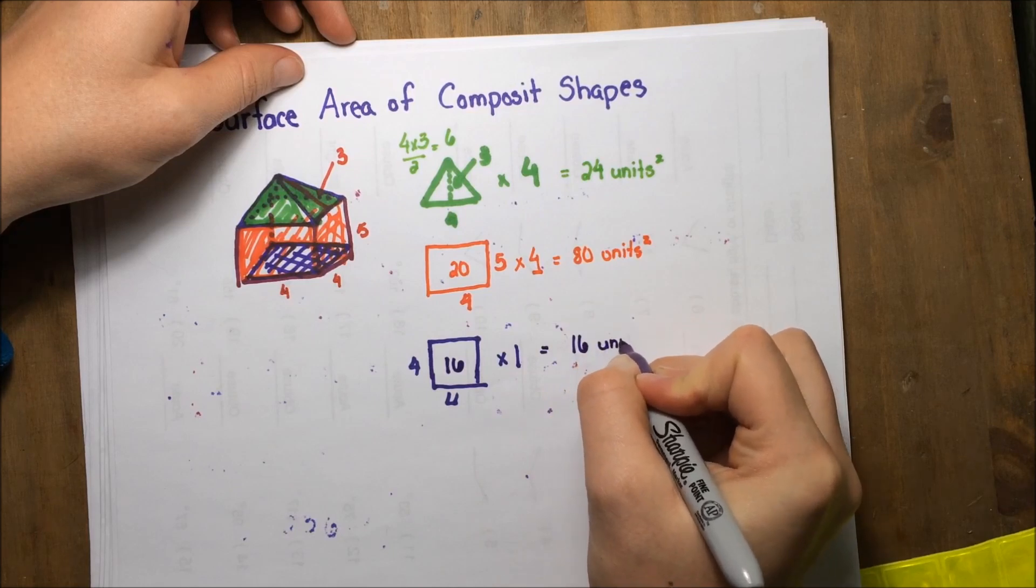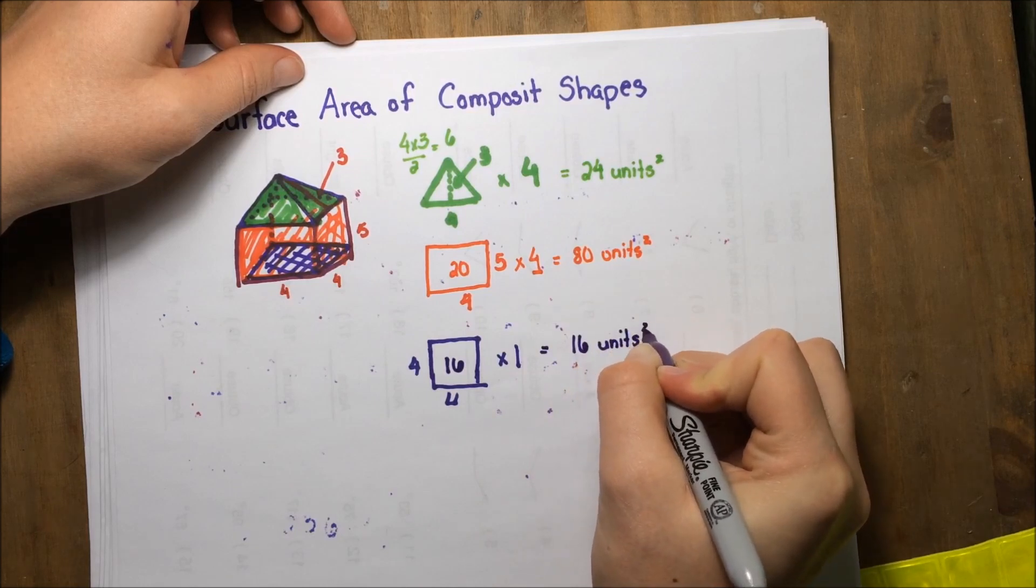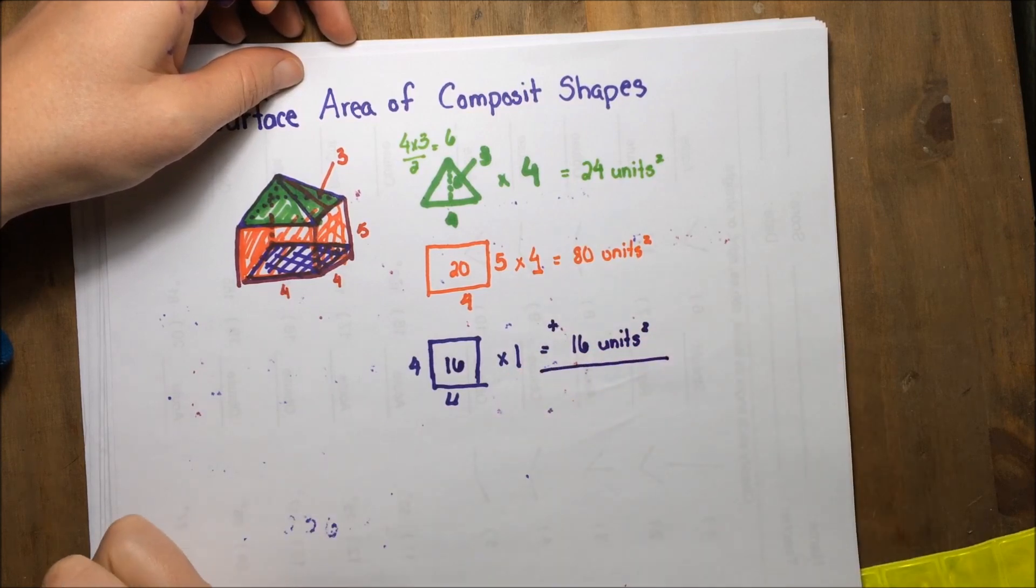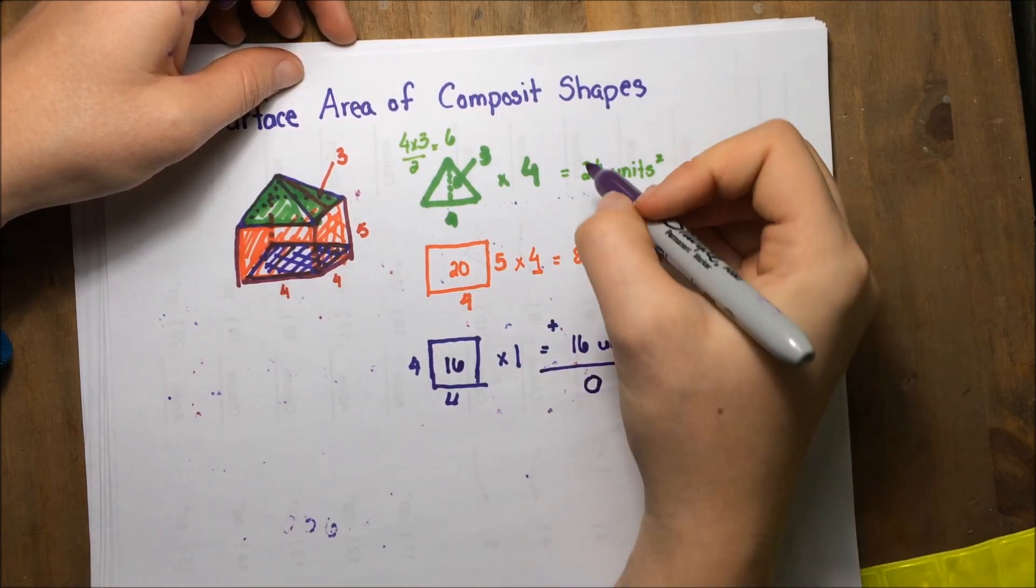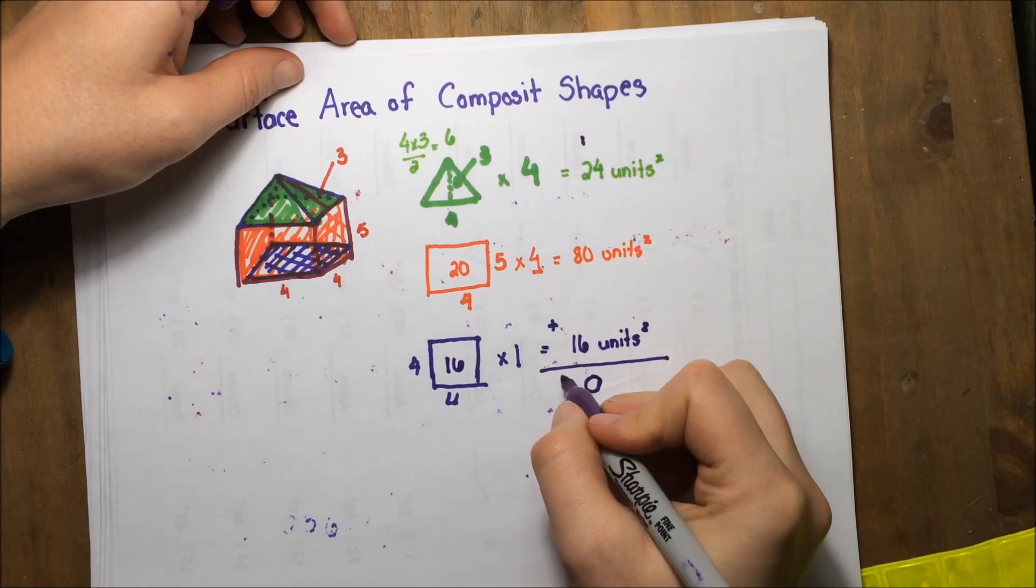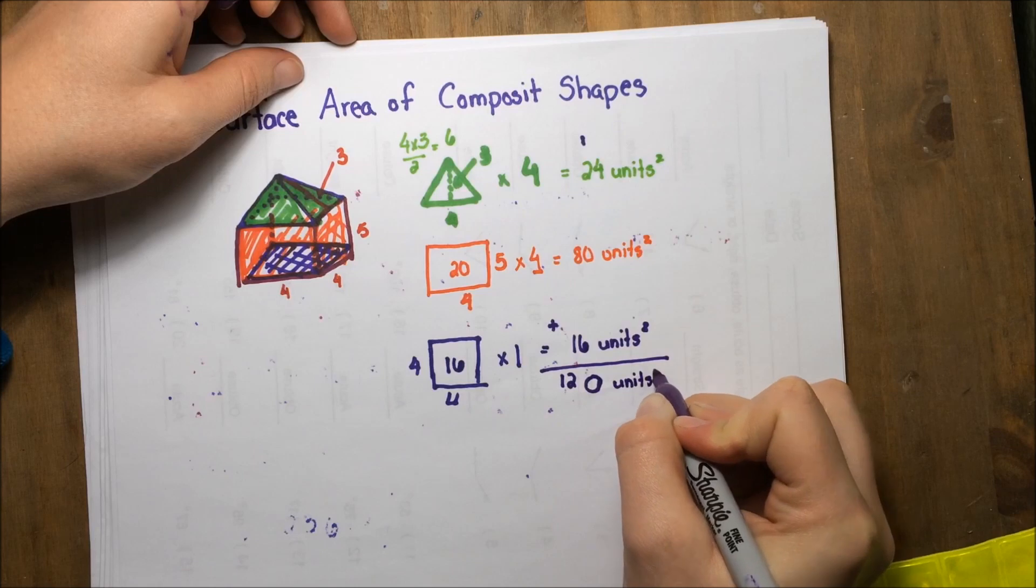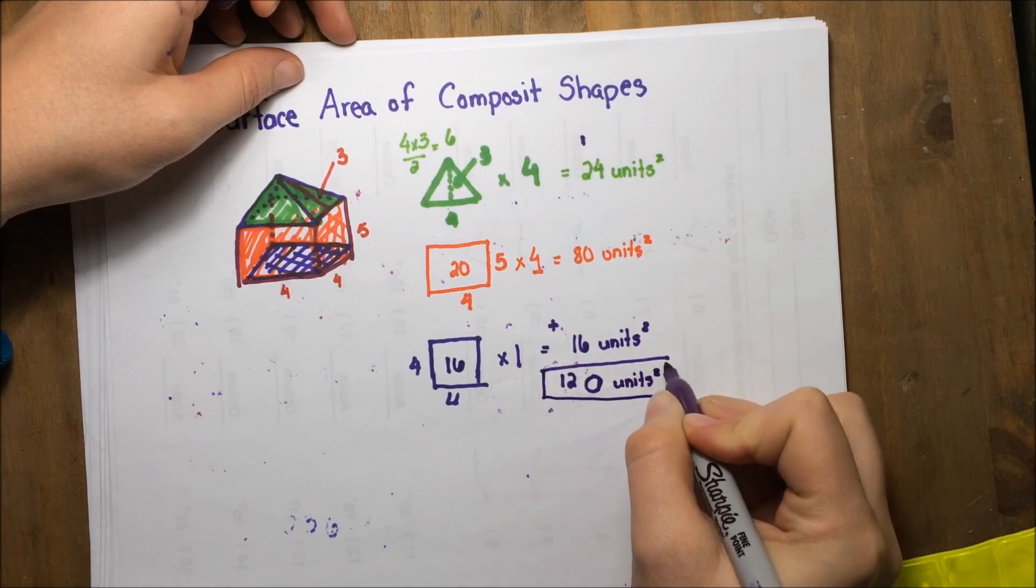My last step, just like all the others, is to add them all up. So that gives me 120 units squared as my answer.